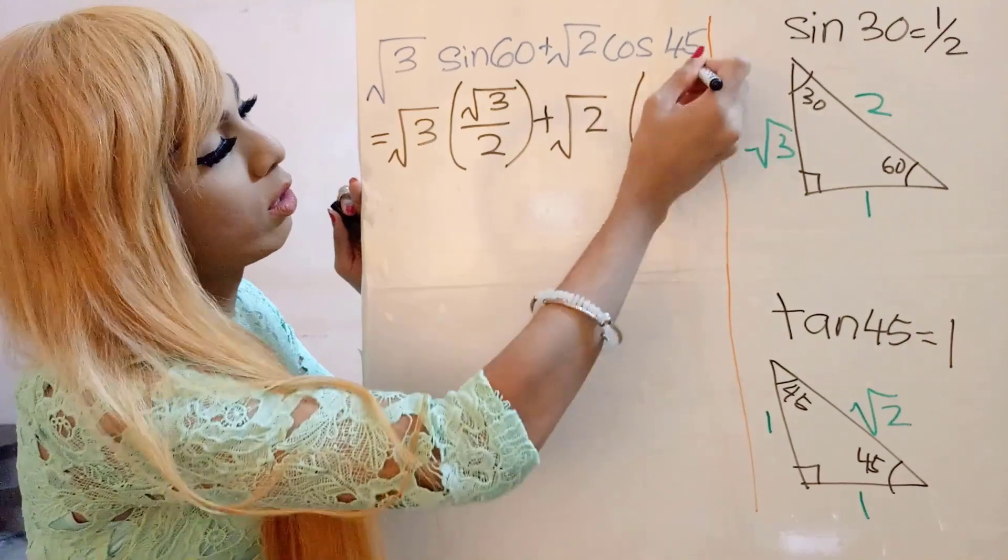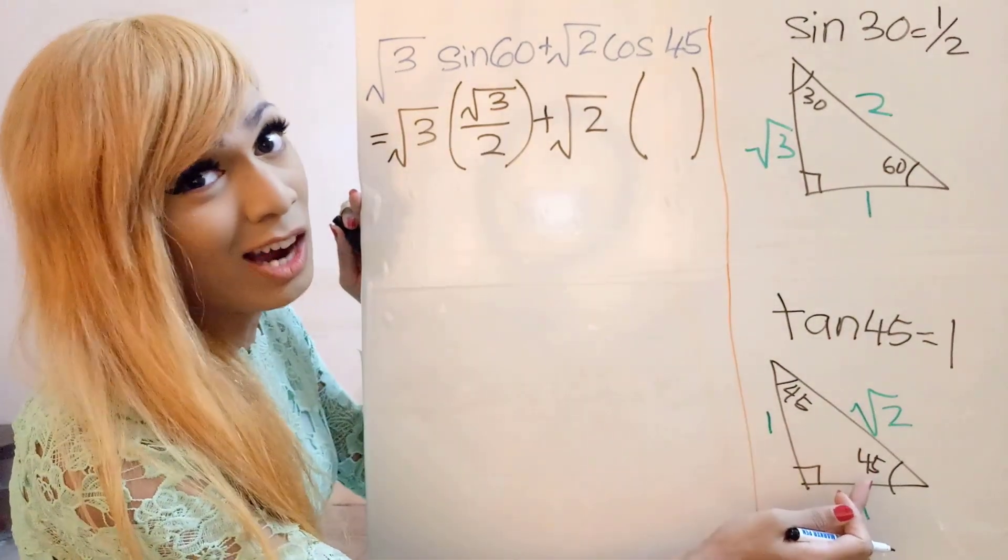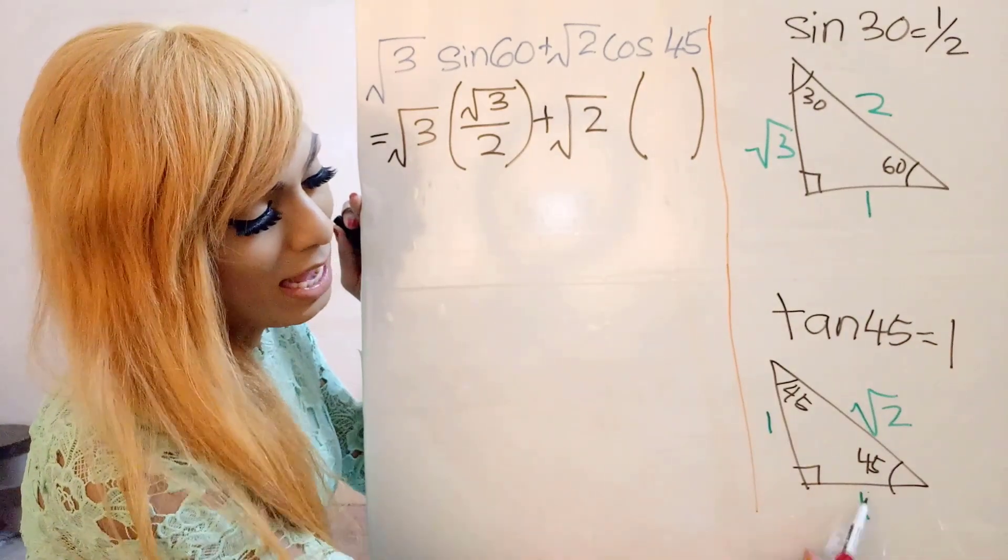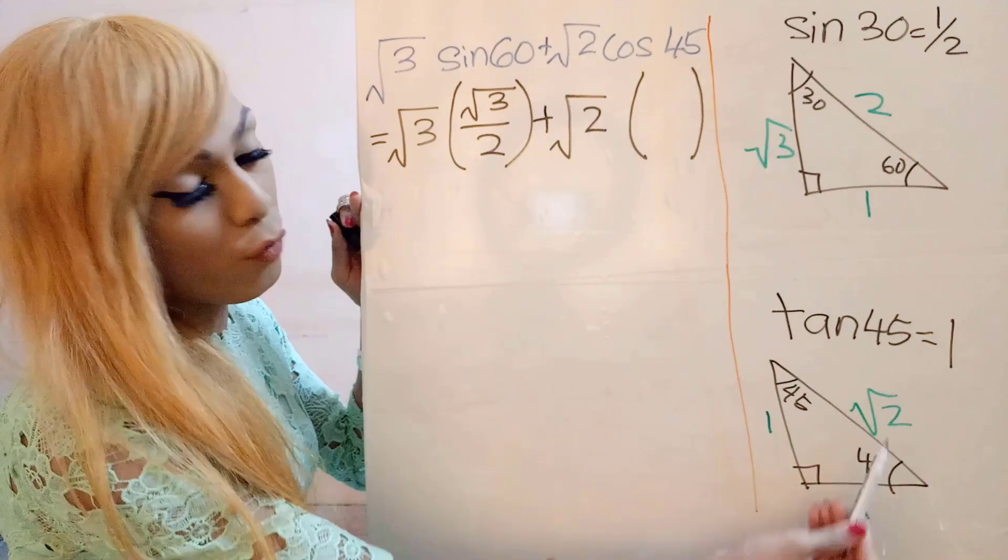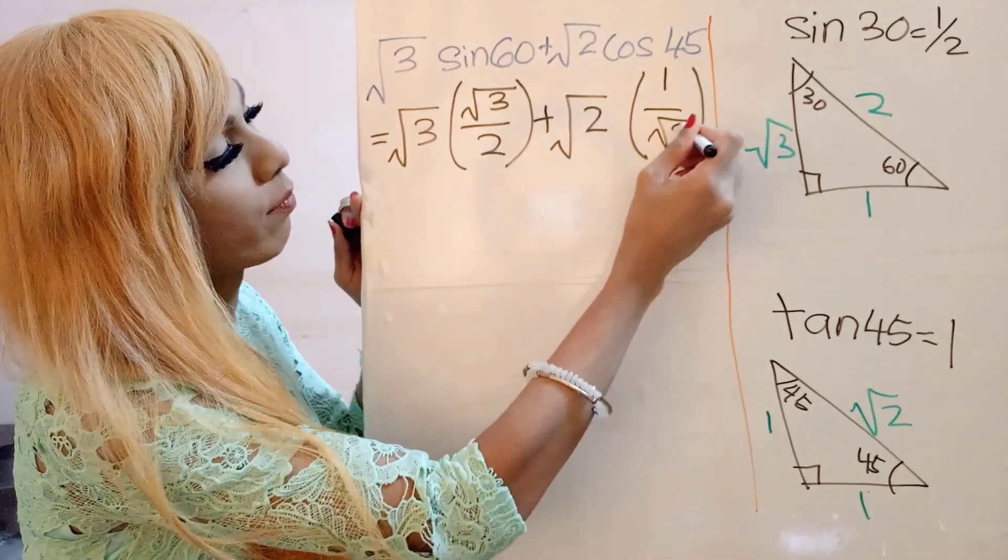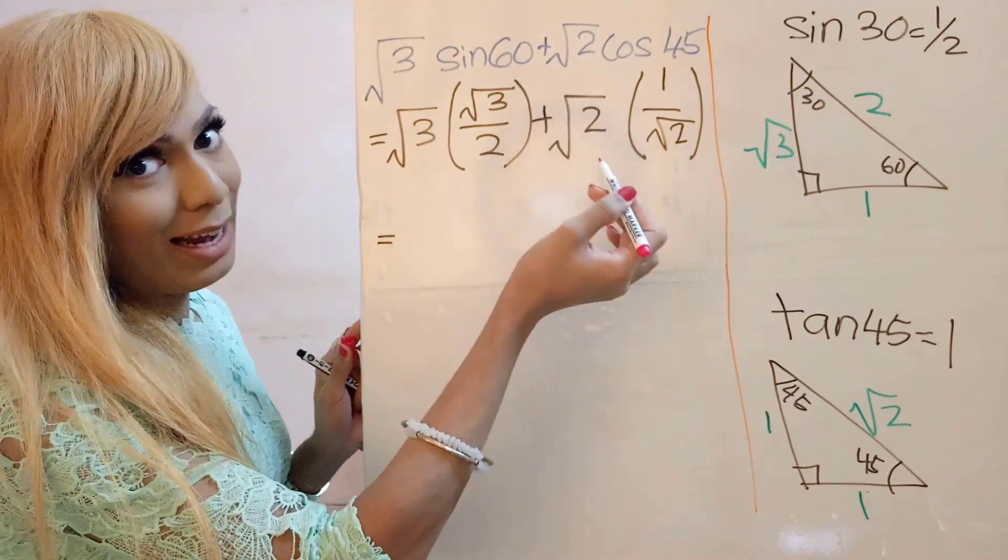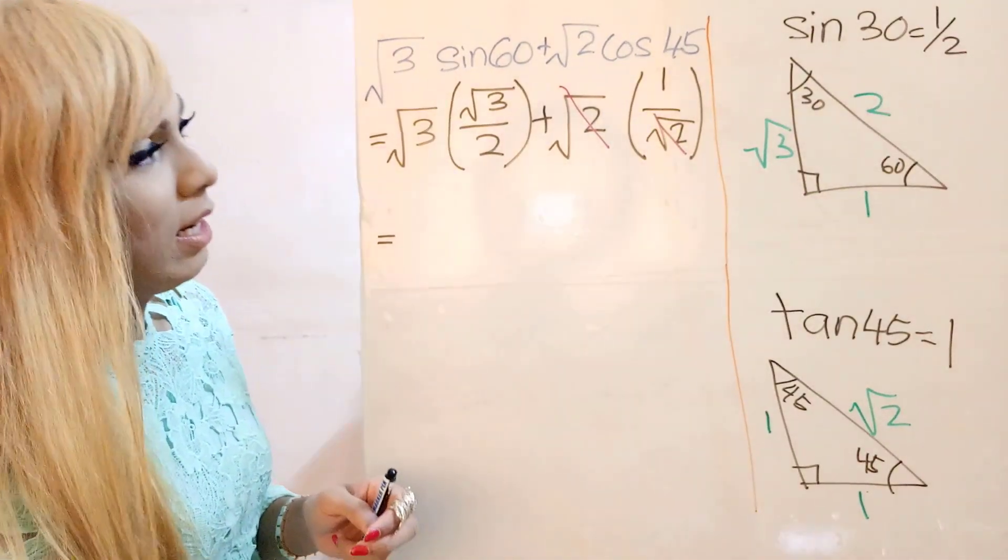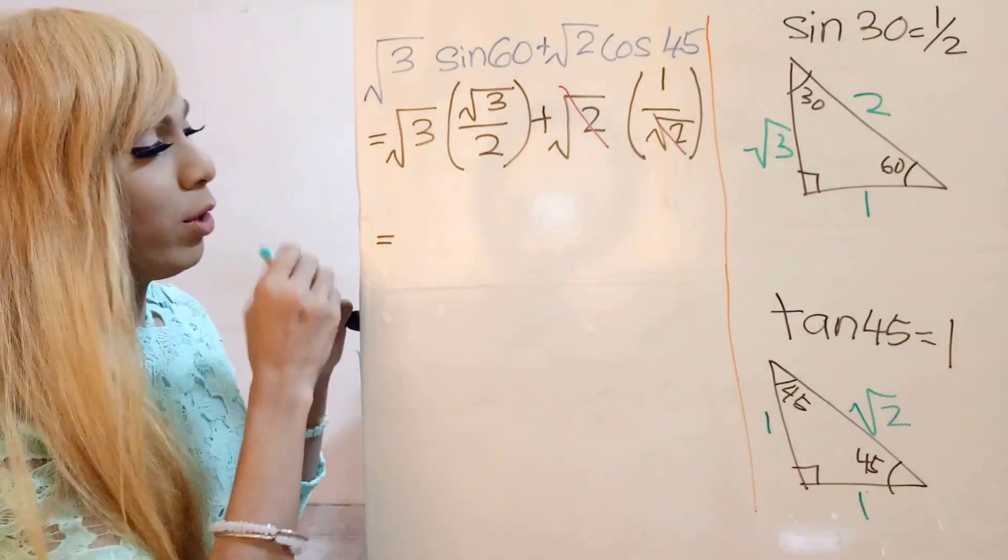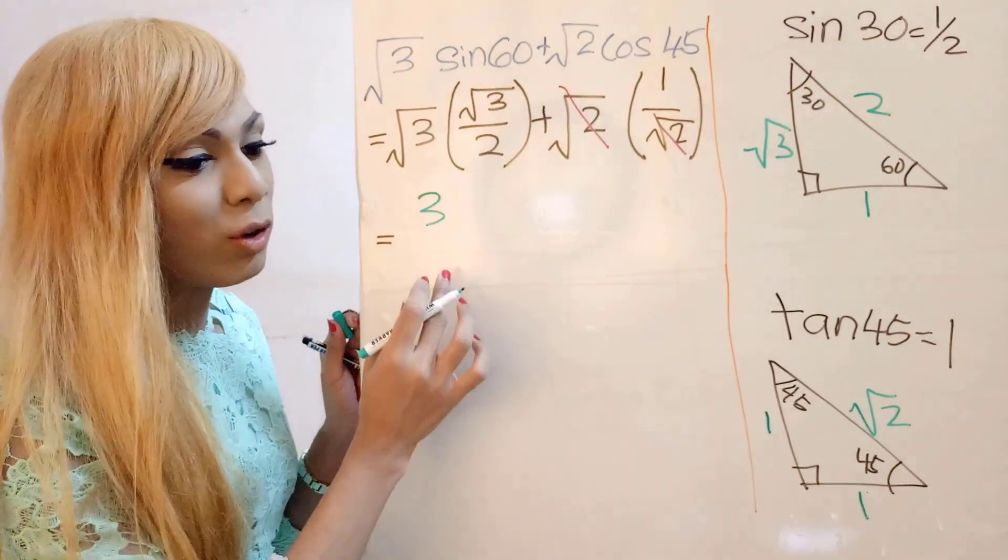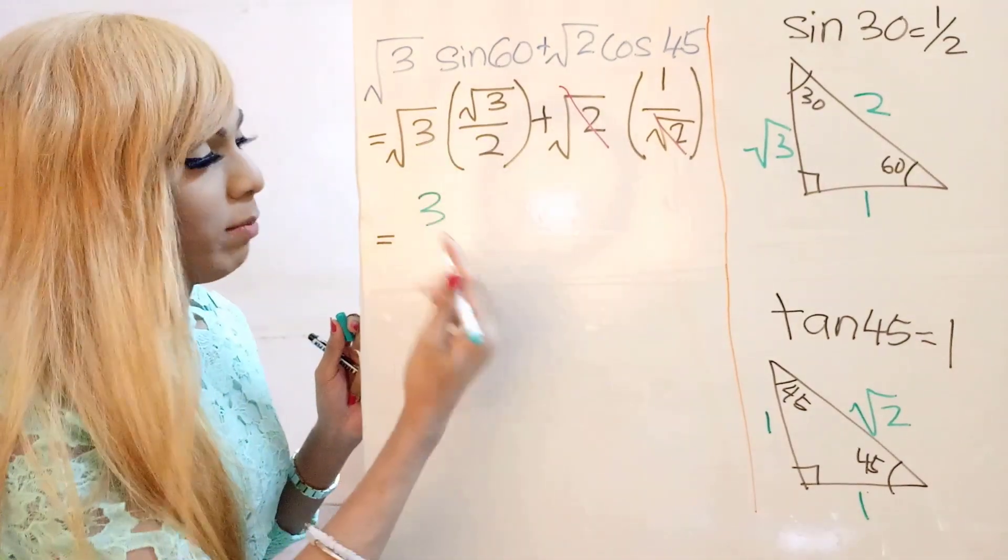Plus square root 2. And then for cos 45, we will take a look at this triangle over here. Cos is adjacent over hypotenuse. So for this angle over here, the adjacent is 1 and the hypotenuse is square root 2. So it's going to be 1 over square root 2. And then we can cross this off, we can eliminate that. And then square root 3 times square root 3, it's going to give us 3. There is a syllabus explaining this. So if you guys want me to give more detail about that, let me know.